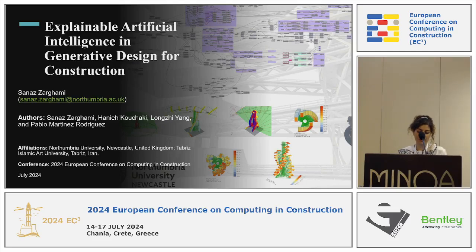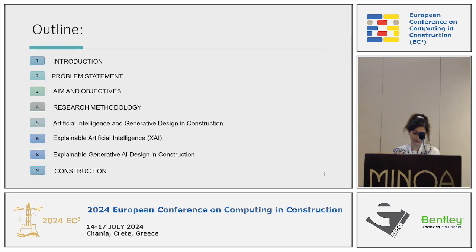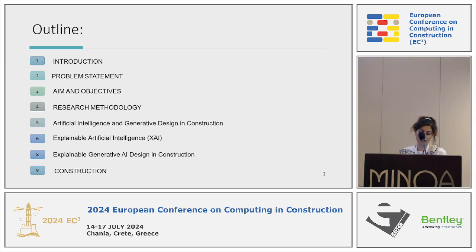The topic is about explainable artificial intelligence in generative design for construction. This is the outline of this study, and we are going to get to know some keywords.